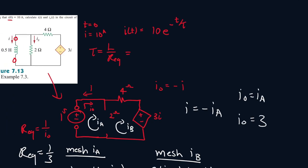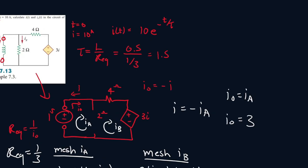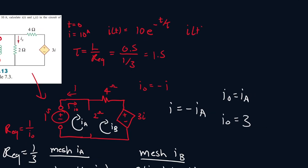Now we can find the time constant. Time constant will be the inductance value, 0.5, all over 1 over 3, which gives me 1.5. So the formula for I of T will be 10 E to the power of T over 1.5.